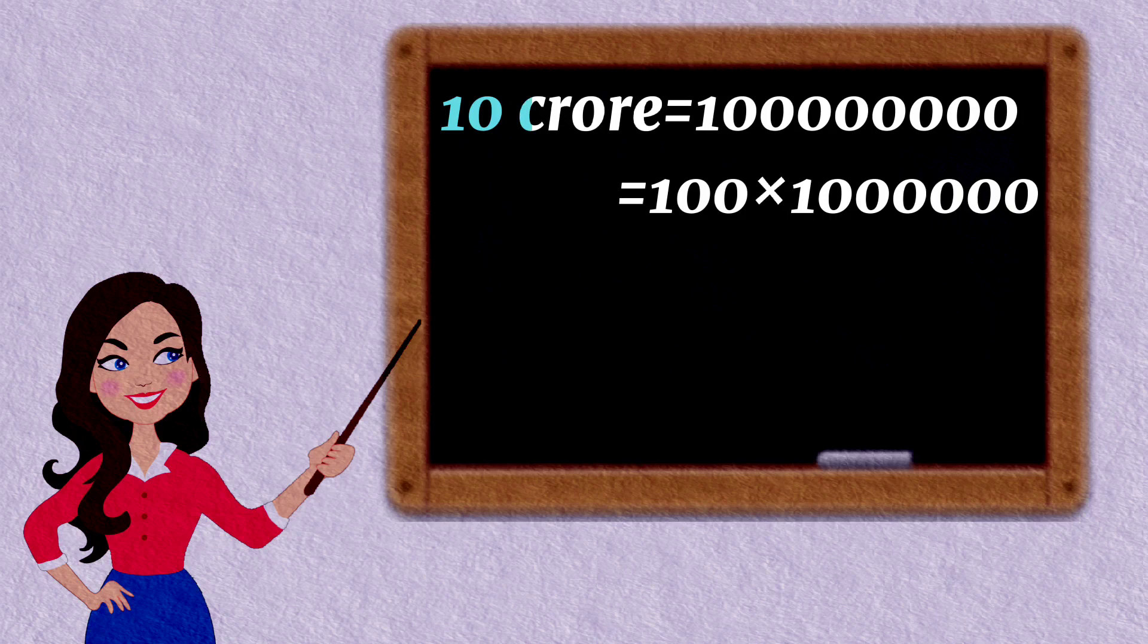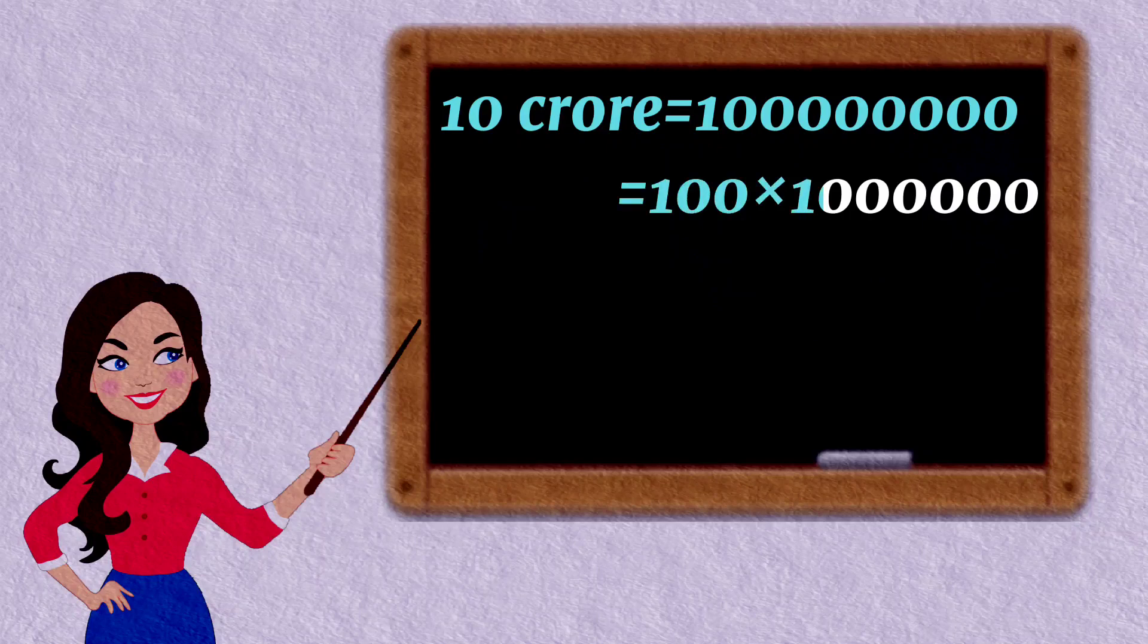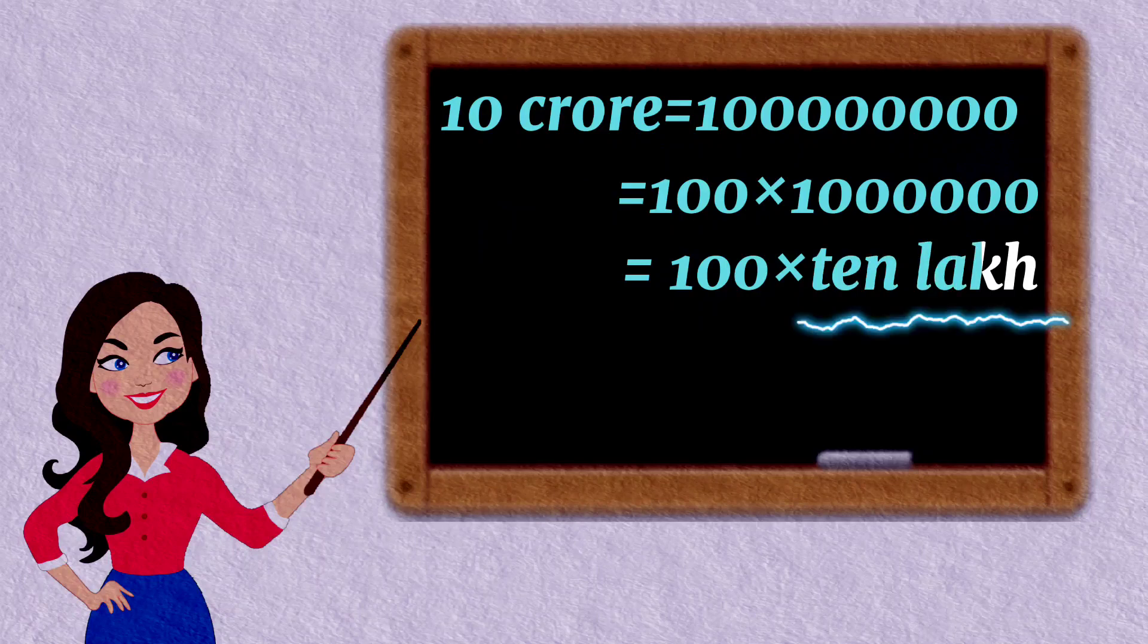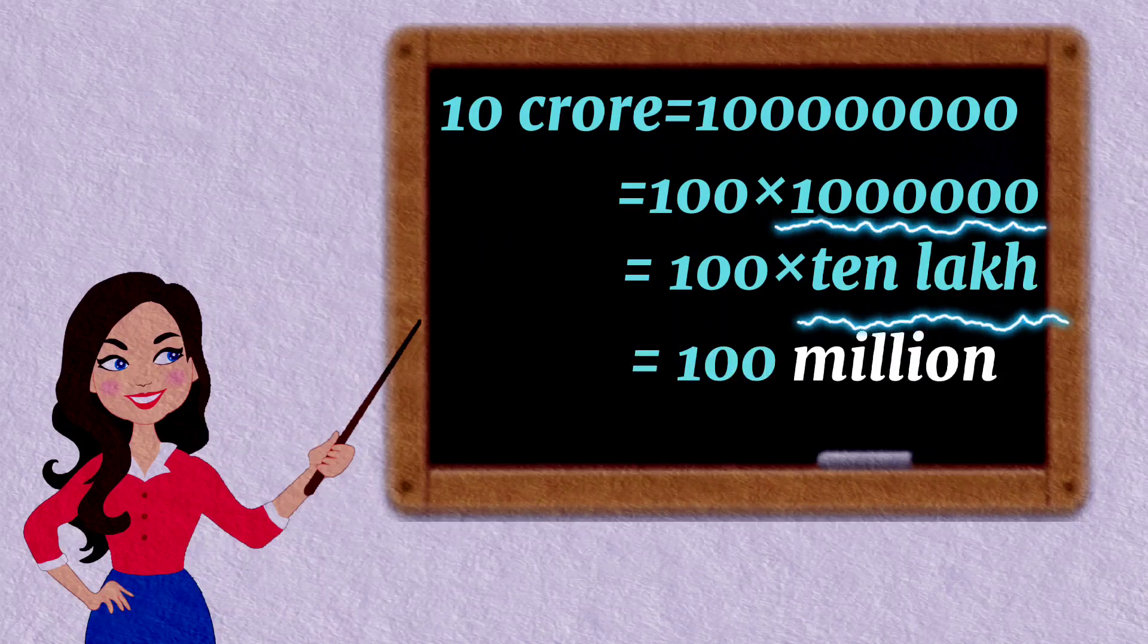Ten crore is equal to one followed by eight zeros, which is same as 100 into ten lakh. We know that ten lakh is equal to one million. So ten crore is equal to 100 million.